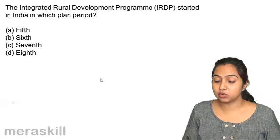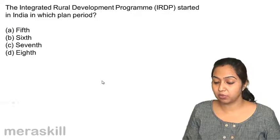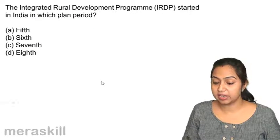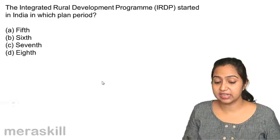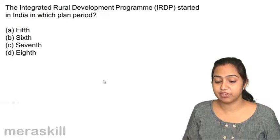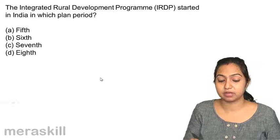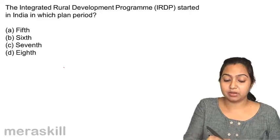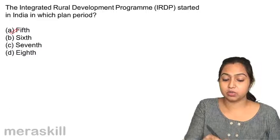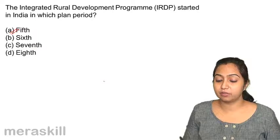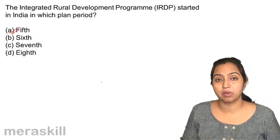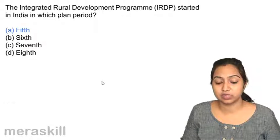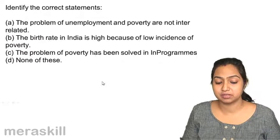The Integrated Rural Development Program, or IRDP, started in which plan period? It started in the fifth plan period. It was only during the fifth plan that poverty alleviation was taken up seriously.